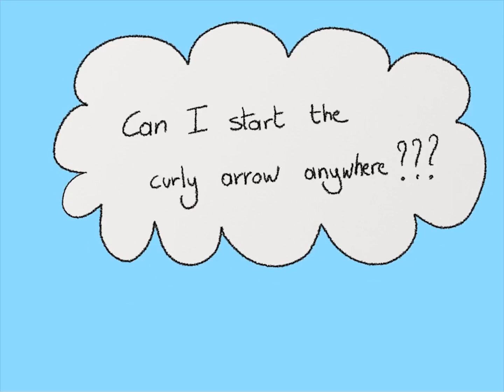Okay, so I can just start by drawing a curly arrow anywhere then? No. What you need to start by doing is figuring out which atoms in a reaction are electron rich, and which atoms are electron poor. And then you're going to draw your curly arrow from those atoms that are electron rich in the direction towards those atoms that are electron poor.